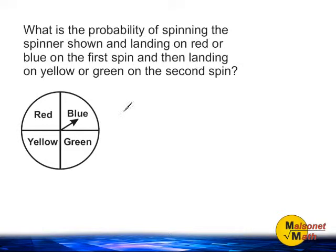In this problem we are taking two spins. We are trying to figure out the probability of landing on either blue or red on the first spin and landing on yellow or green on the second spin.